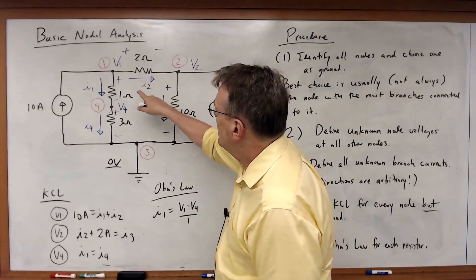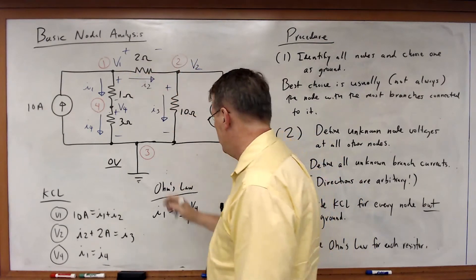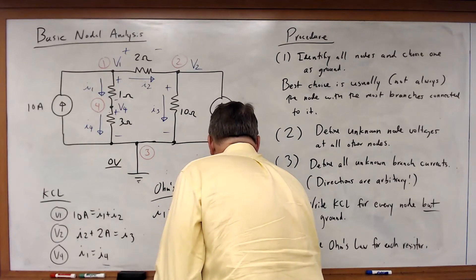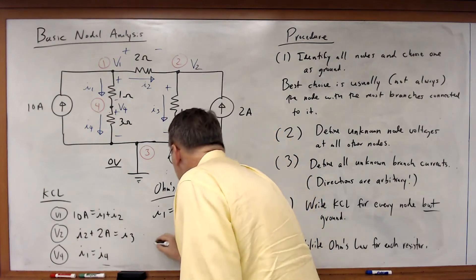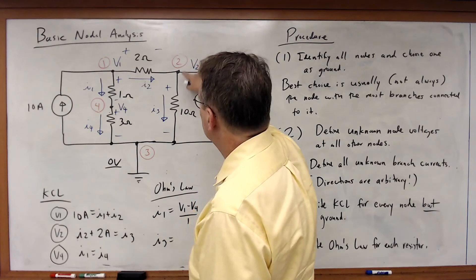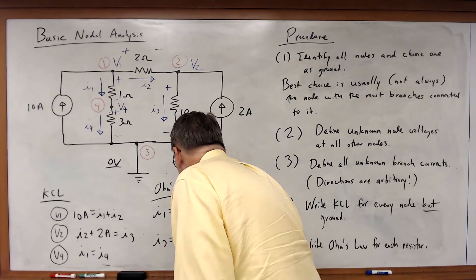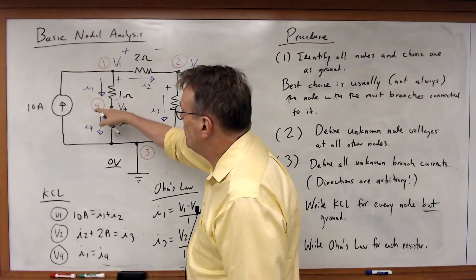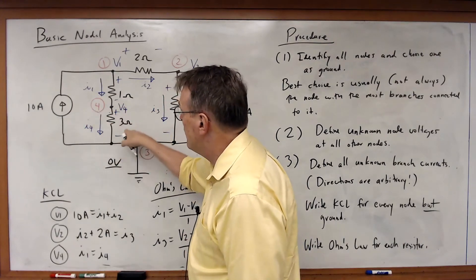For I2, I2 is equal to V1 minus V2 over 2. For I3, I3 is equal to V2 minus 0 over 10. And I4 is equal to V4 minus 0 over 3.